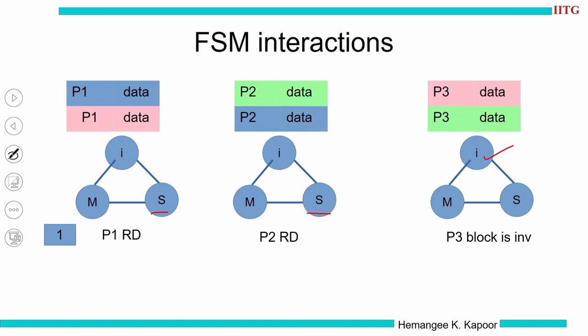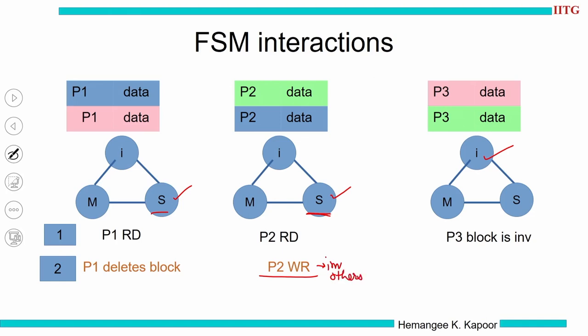If P1 reads, it has the block, so it simply hits in the cache and finishes. Similarly, P2 can finish reading. P3 has nothing to do. Next, if P2 tries to write, it is currently in shared state. Knowing there could be other copies in the system, it must invalidate others. It sends a message on the bus that deletes the block in P1, so P1 moves to invalid.